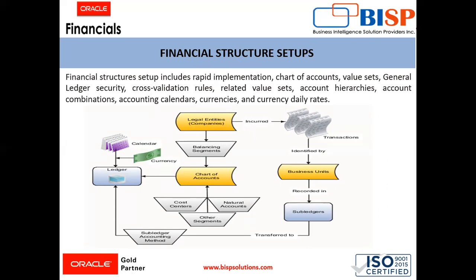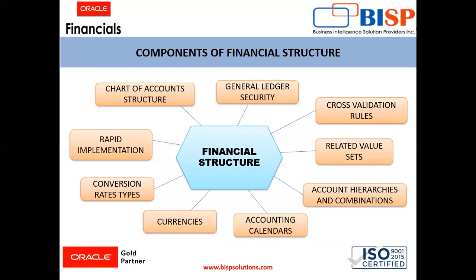Majorly, these are the components of the financial structure setups: rapid implementation, chart of account structure, general ledger security, cross validation rules, related value sets, accounting hierarchies and combinations, accounting calendars, currencies, and conversion rate types. We have to define these setups in the system to manage the flow of enterprise structure setup.